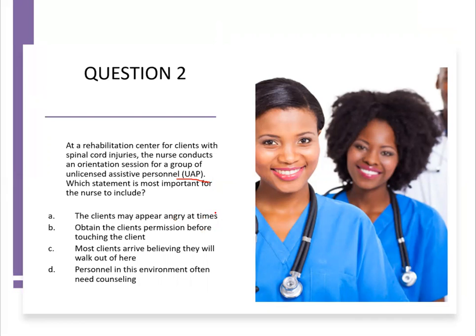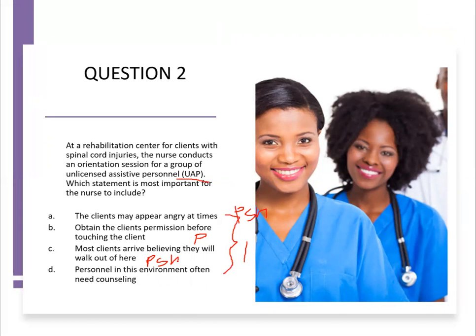Going to step two, all the answer options are implementation choices, so we can't eliminate any. Moving to step three: Option A — clients might be angry at times — anger is psychosocial. Option B — obtain the client's permission before touching the client — that's legal, which we categorize as physical. Option C — most clients arrive believing they'll walk out of here — that's also psychosocial. Option D — personnel in this environment often need counseling — counseling is also psychosocial.